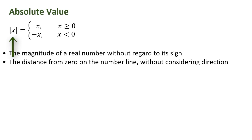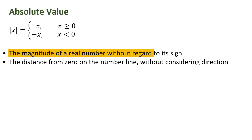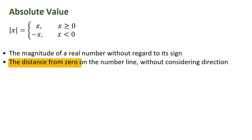The absolute value of x, indicated by the two vertical bars, is just x when x is zero or positive — x is greater than or equal to zero — or negative x when x is negative. Obviously if you take the negative of a negative it's a positive. So in words, the magnitude of a real number is what the absolute value is, without regard to its sign. Or we can think of the absolute value as the distance from zero on the number line without considering direction.